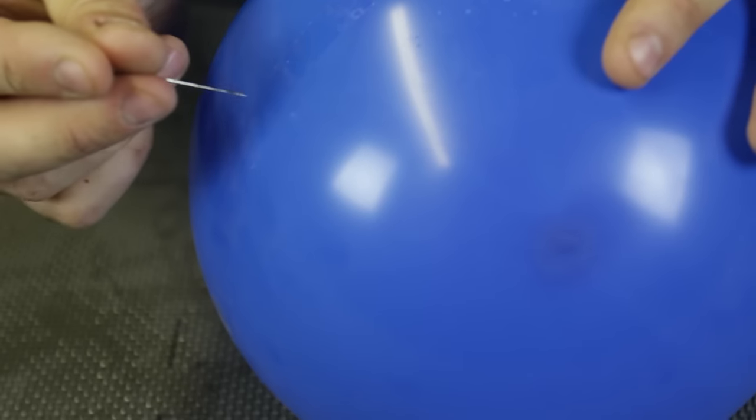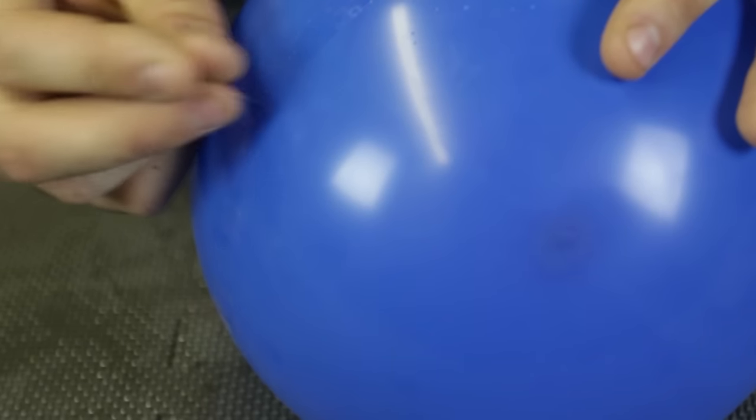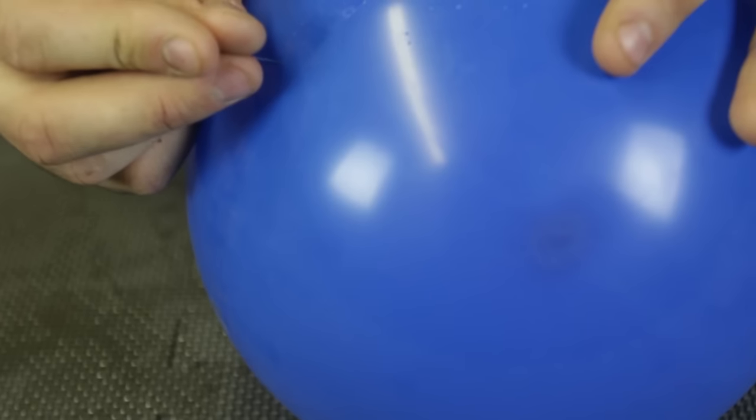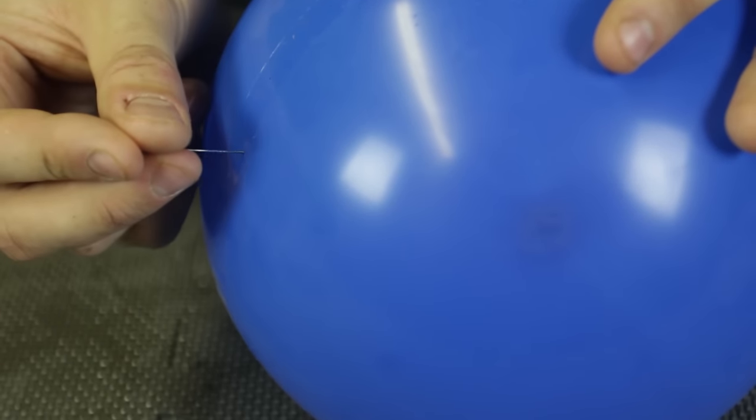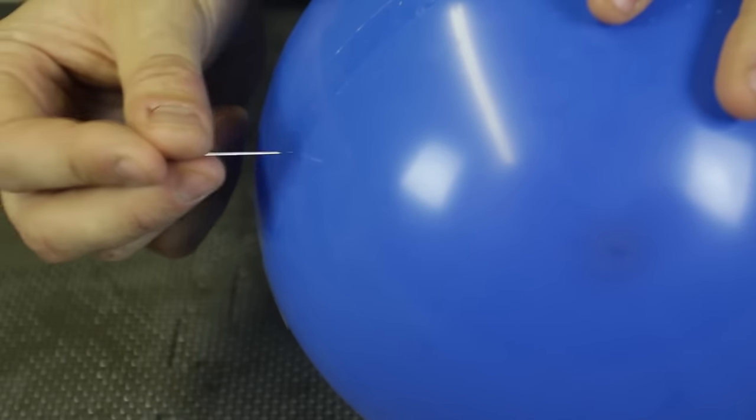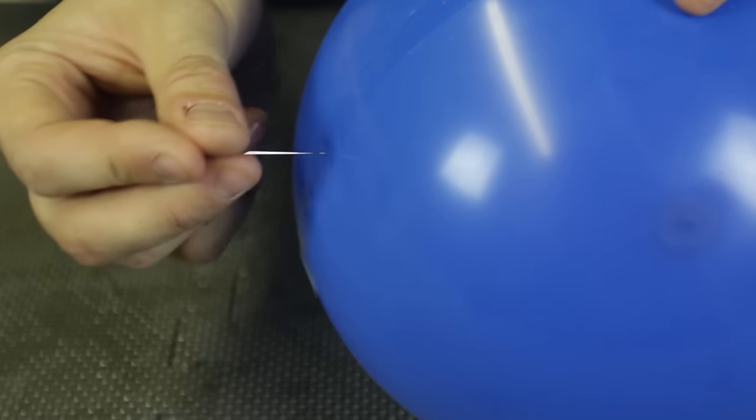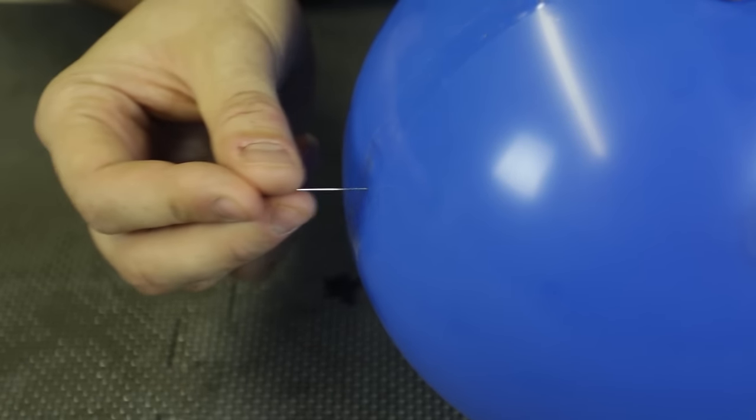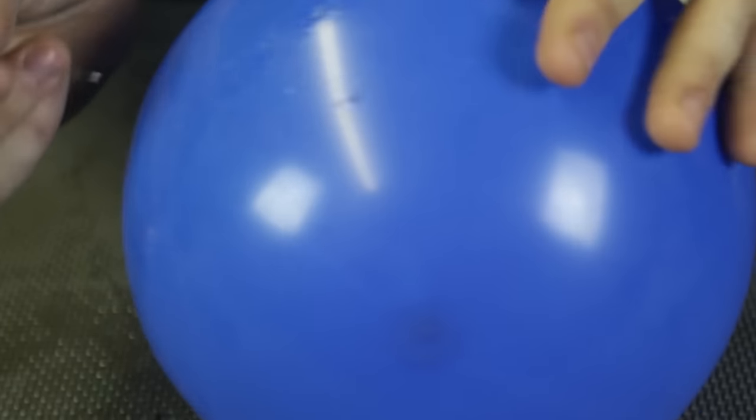Make sure it's taped really well. Now let's see what happens if I'm gonna poke it right on the tape. Boom. Look, it's not popping. Isn't it crazy? So the tape is actually holding the balloon together. Pretty awesome, huh?